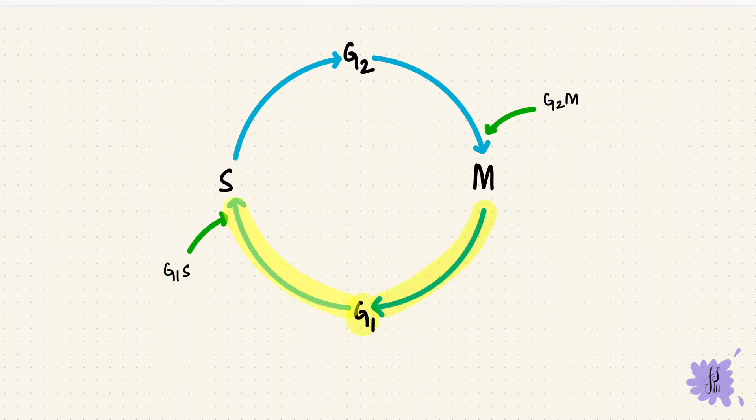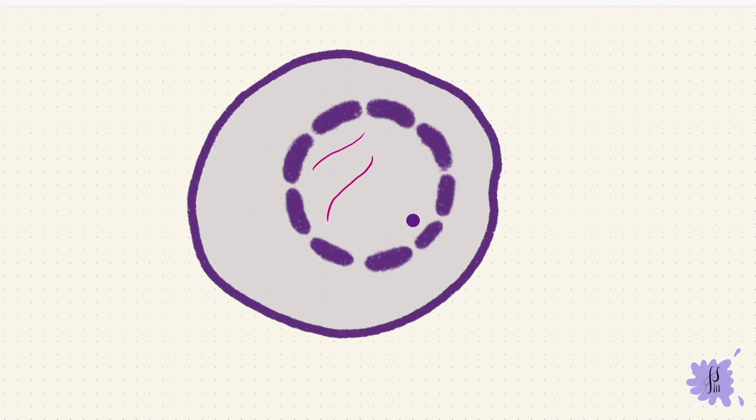If the cell gets past all these checkpoints and the three phases of interphase, it's now ready for mitosis. So this is the cell with the nucleus and the cytoplasm. We're going to enlarge the nucleus because most of the mitosis events happen inside the nucleus. Now you can see that chromosome replication has already happened before mitosis even began.